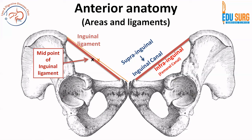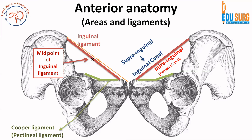The midpoint of the inguinal ligament is lateral to the mid-inguinal point. The black cross marks the midpoint of the inguinal ligament and it marks the deep inguinal ring — all of us know it marks the deep inguinal ring. As discussed previously, the pectineal ligament is on the pectineal line on the superior pubic ramus, and that is also known as the Cooper's ligament.